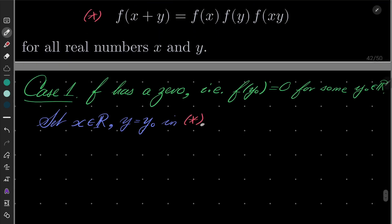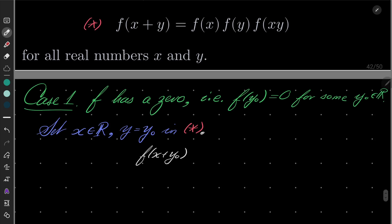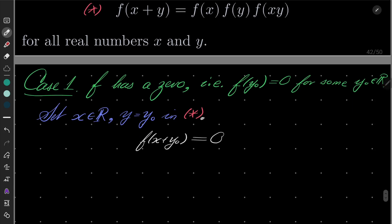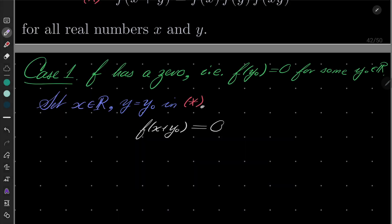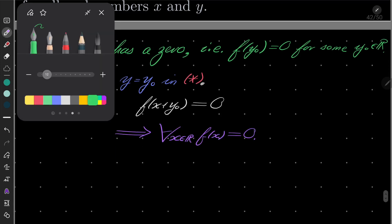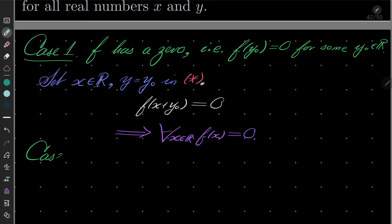We have f(x + y₀), and notice that since f(y₀) is 0, the entire right-hand side becomes 0. That holds for every real number x, so our function is constantly 0 — for every x, f(x) = 0. Nothing very interesting. Case two will be much more interesting.